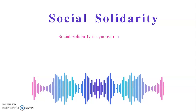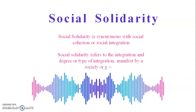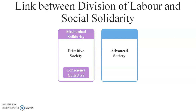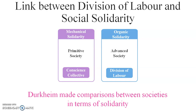Durkheim focuses on the relationship between individual and society, shown through the relationship between social solidarity and division of labor. Social solidarity is synonymous with social cohesion or social integration, referring to the integration and degree of unity manifest by a society or group. According to Durkheim, primitive society is characterized by mechanical solidarity, based on the collective conscience, while advanced society is characterized by organic solidarity, based on the division of labor.